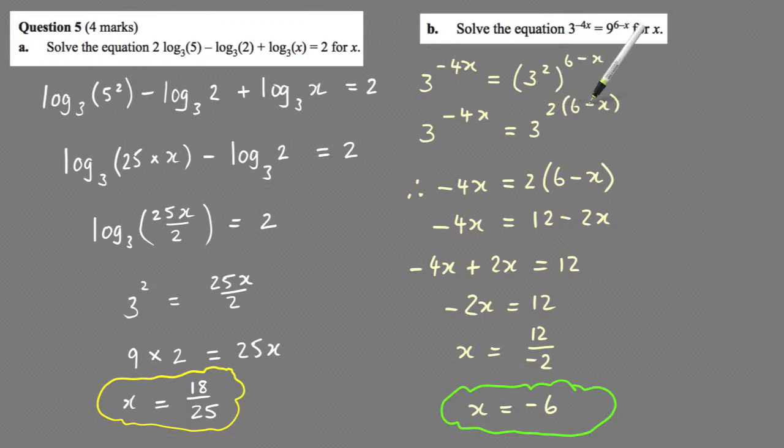You keep that base and then multiply the powers as I've done here. Now because the bases are the same number, the powers must be equal to each other. So minus 4x equals 2 bracket 6 minus x.